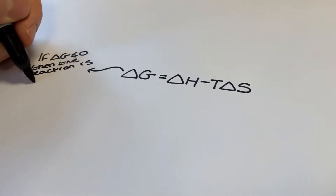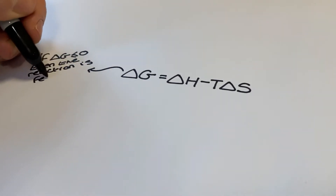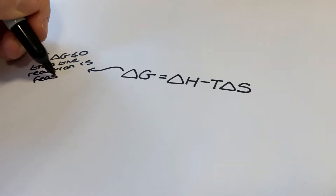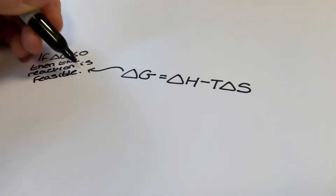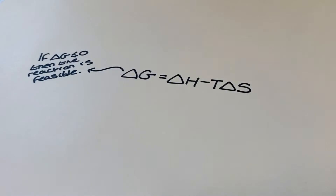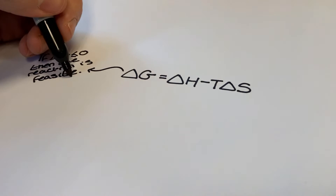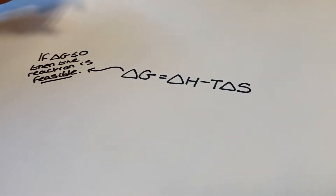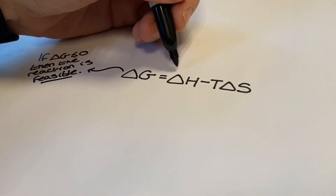In this video we are going to explore the influence that the signs of delta H and delta S values have on the value of delta G, and we're also going to revisit how we can set delta G equal to zero and use a rearrangement of the free energy equation to calculate the temperature at which the feasibility of the reaction changes.